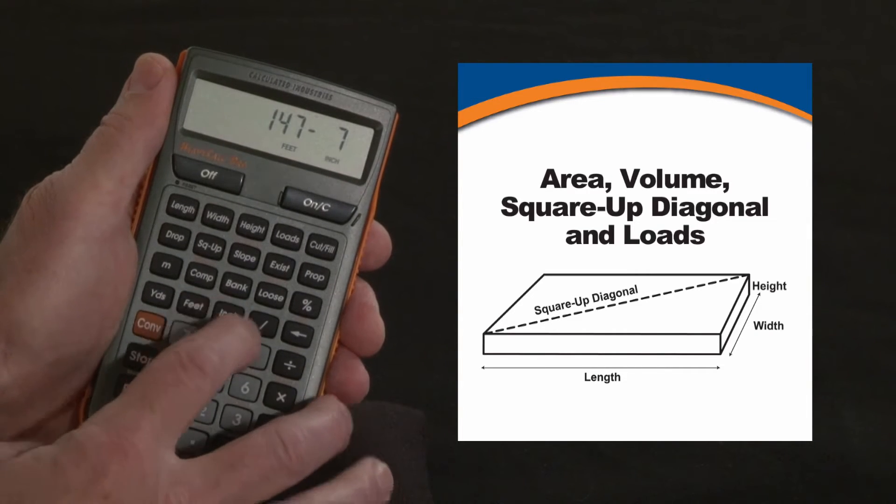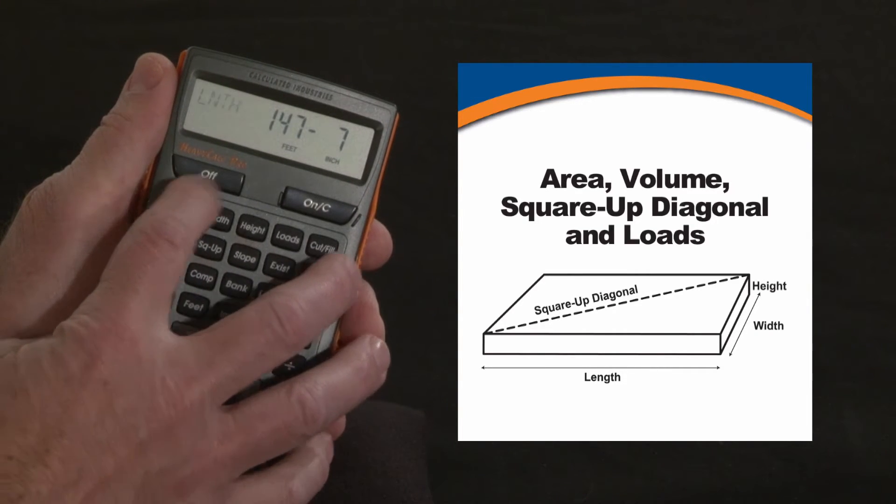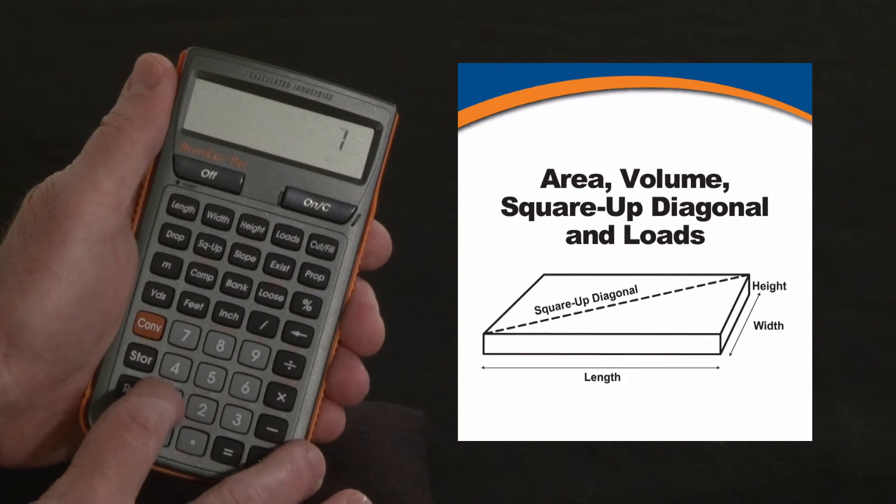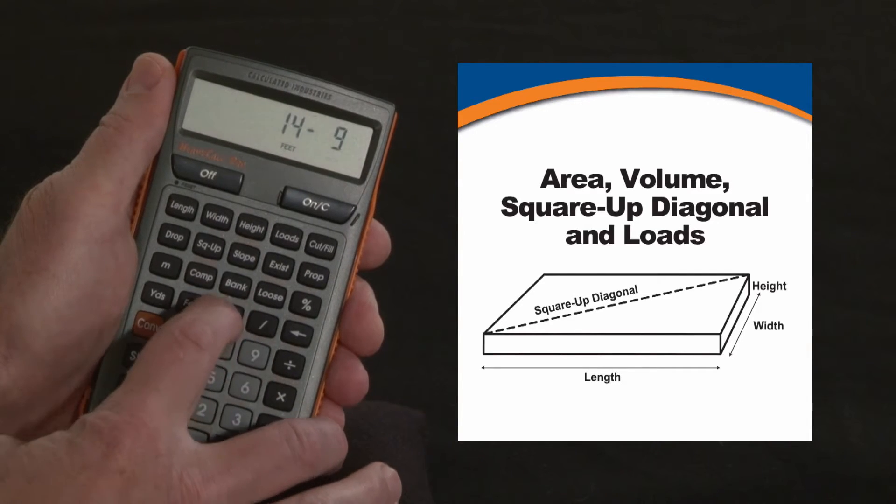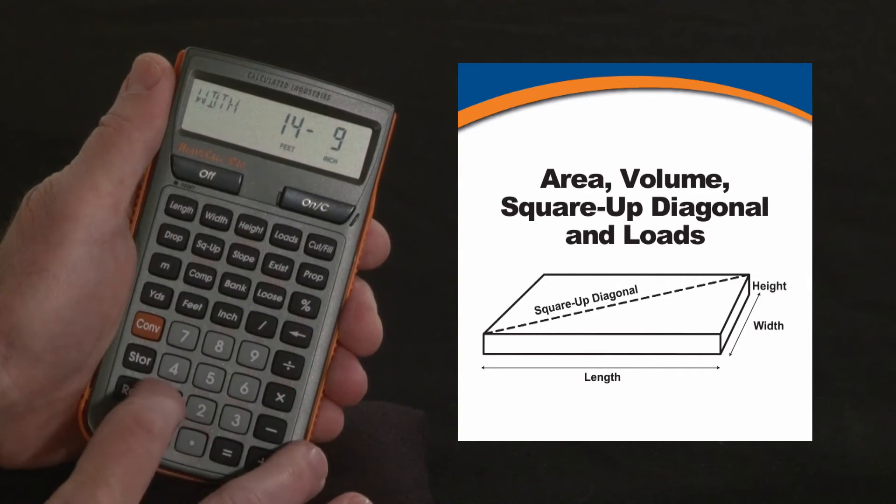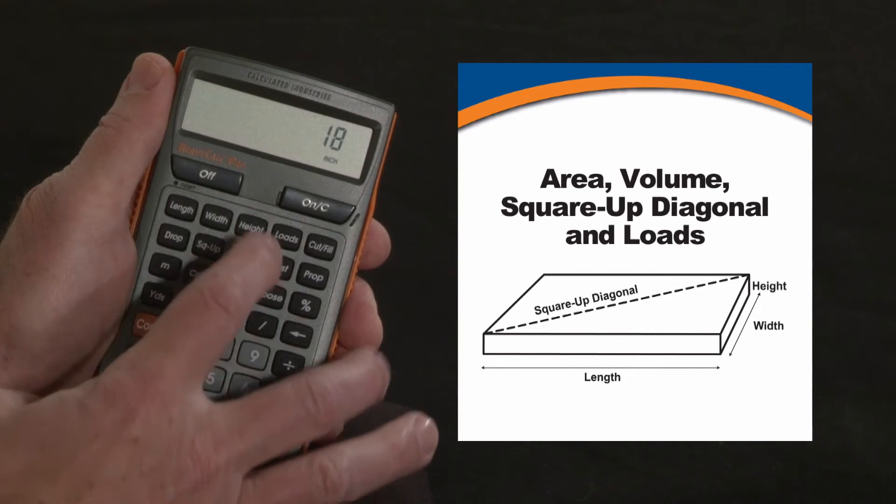147 feet, 7 inches, let's call that the length of a long driveway. 14 feet, 9 inches is the width, and we want to go 18 inches down, 18 inches of depth. So now it's all set to give a series of answers.